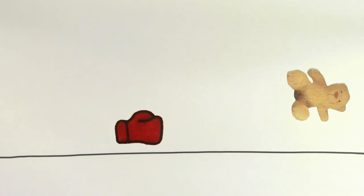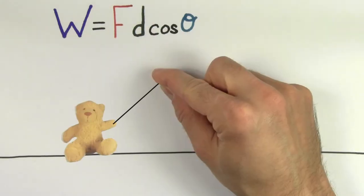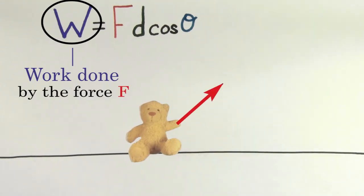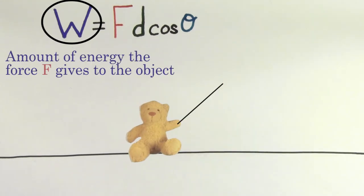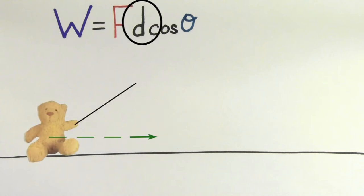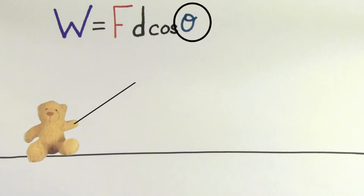The formula to find the work done by a particular force on an object is W equals Fd cosine theta. W refers to the work done by the force F — in other words, W is telling you the amount of energy that the force F is giving to the object. F refers to the size of the particular force doing the work. D is the displacement of the object, how far it moved while the force was exerted on it. And theta in cosine theta refers to the angle between the force doing the work and the displacement of the object.